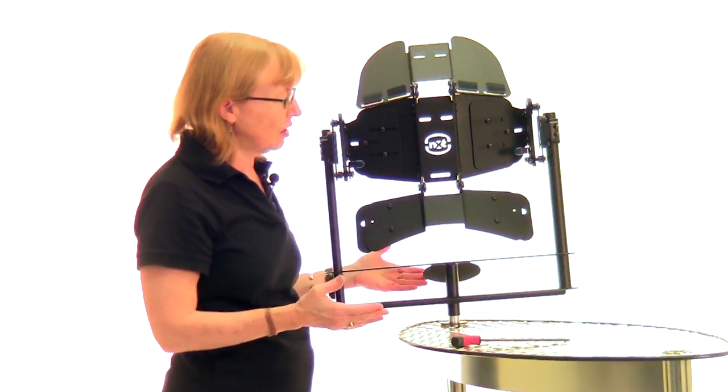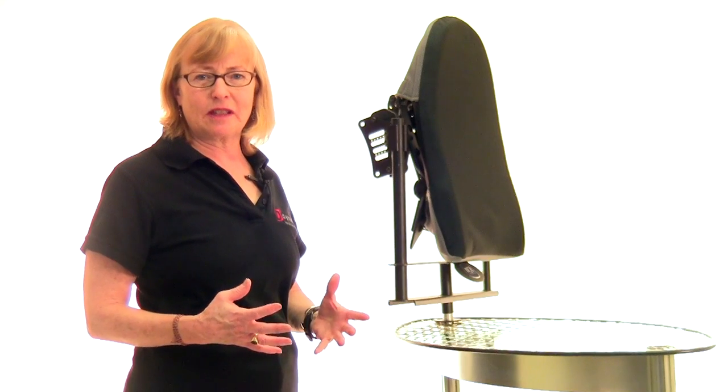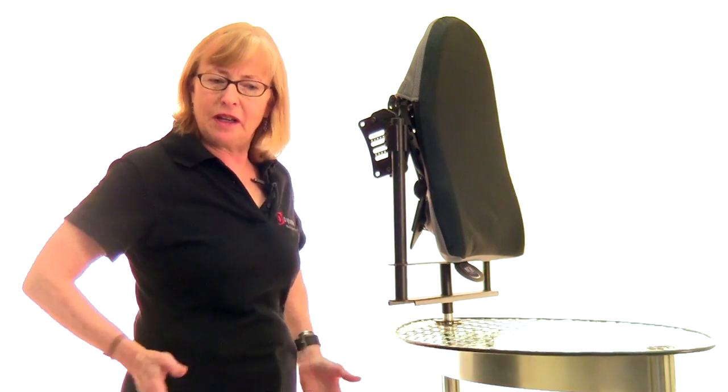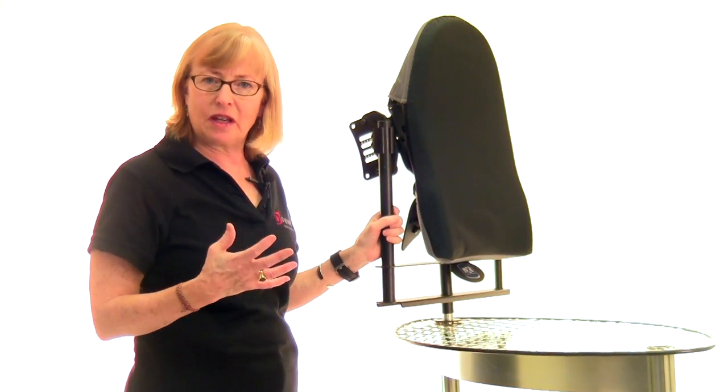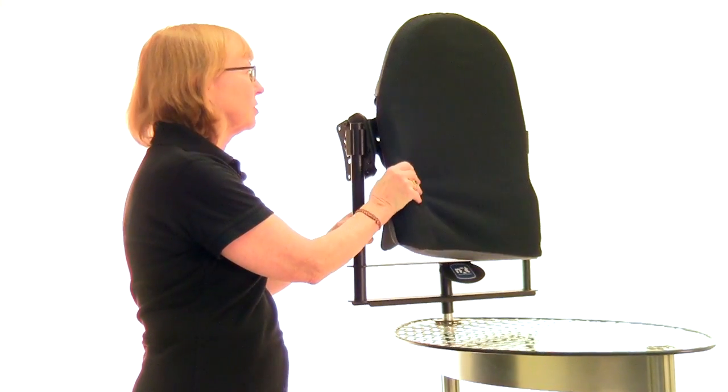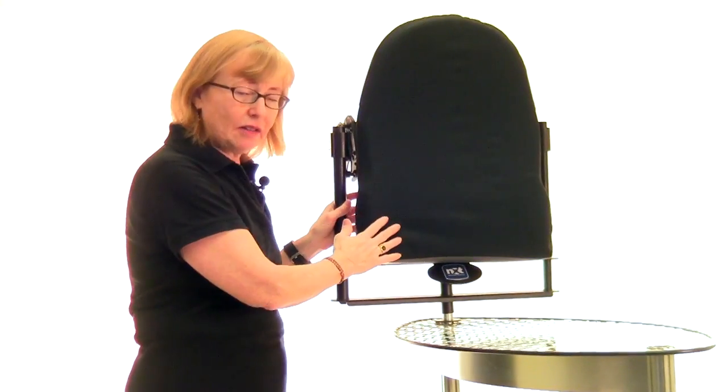The Armadillo comes with two interfaces that you can use to come between the aluminum shell and the client. One is made out of foam and the other is a Vicar interface. I'm going to talk about the foam interface first. It is a flat foam, so you're doing all the contouring with the aluminum shell. You can add lateral supports.